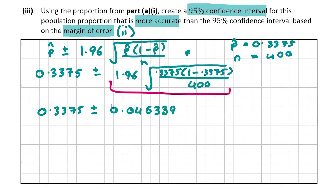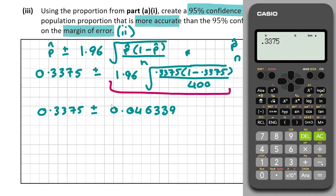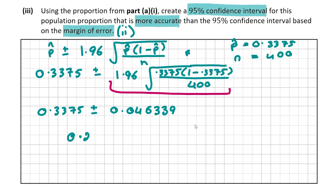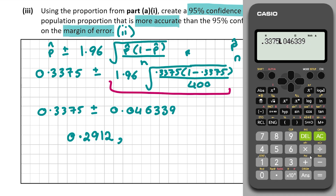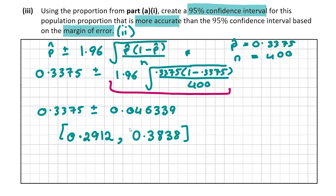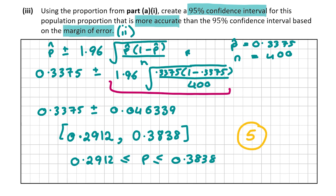Now let's find the lower and upper bounds. For the lower bound we subtract 0.046339 from 0.3375, giving 0.2912. For the upper bound we add 0.046339 to 0.3375, giving 0.3838. So our interval is 0.2912 ≤ P ≤ 0.3838, worth 5 marks. This means we are 95% confident the proportion lies within this confidence interval.